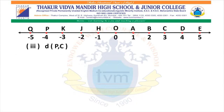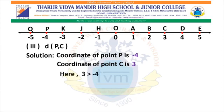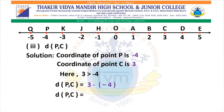Here we have the next question: find distance P, C. We will solve the bracket first — minus into minus is plus. So, 3 plus 4. Distance P, C equals 7.